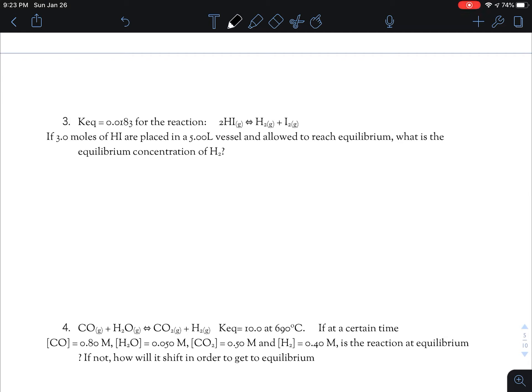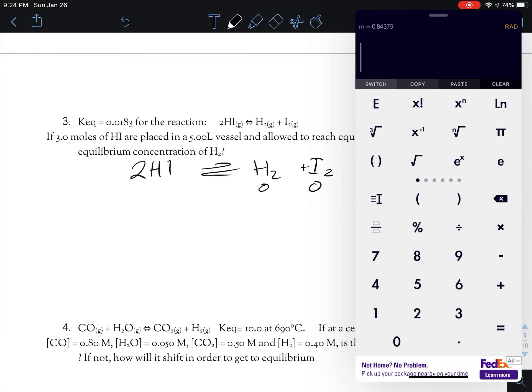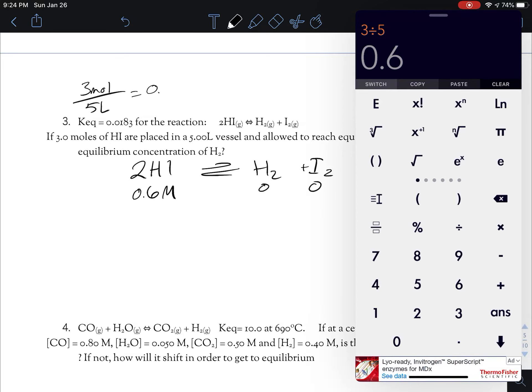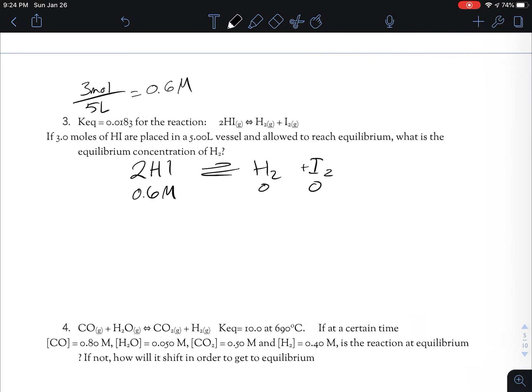We did have three significant figures, so we can leave it three significant figures. So that's the Keq constant. So then they give us another question. They have Keq is this much for this reaction. Look at that lower case phase symbols. If three moles of HI are placed in a five liter vessel and allowed to reach equilibrium, what is the equilibrium concentration of H2? So this is an ICE table technically, but it's one of the simpler ones. You have H2 and I2. You do not know how much, you had zero to start. And we have three moles in five liters. So that's three moles in five liters, so 0.6 concentration molarity. So that's three moles divided by five liters gives me 0.6 molar.